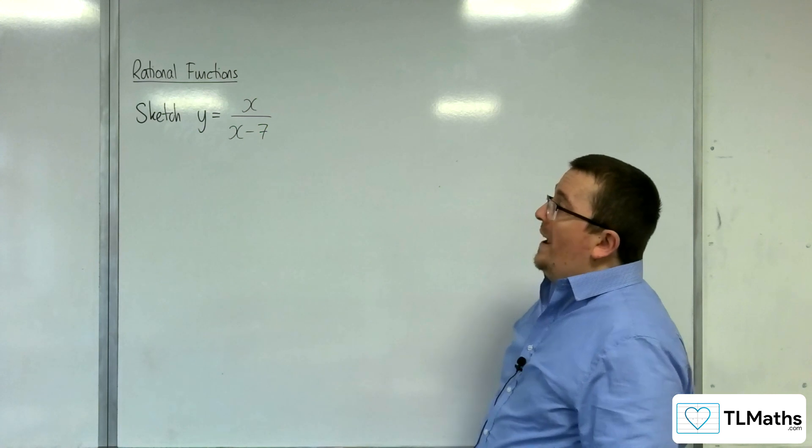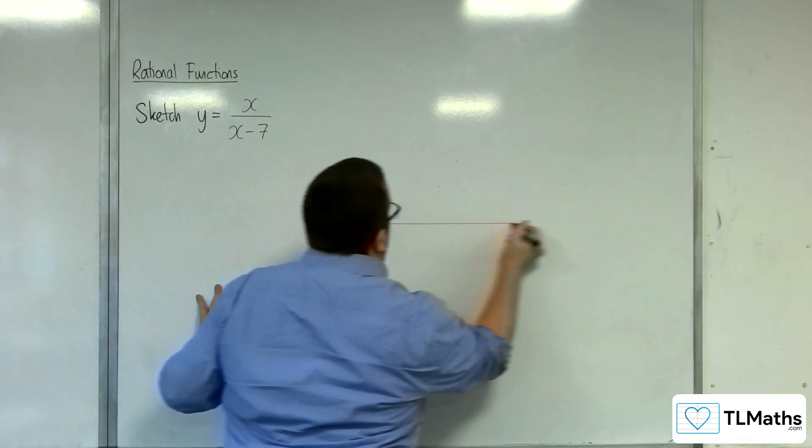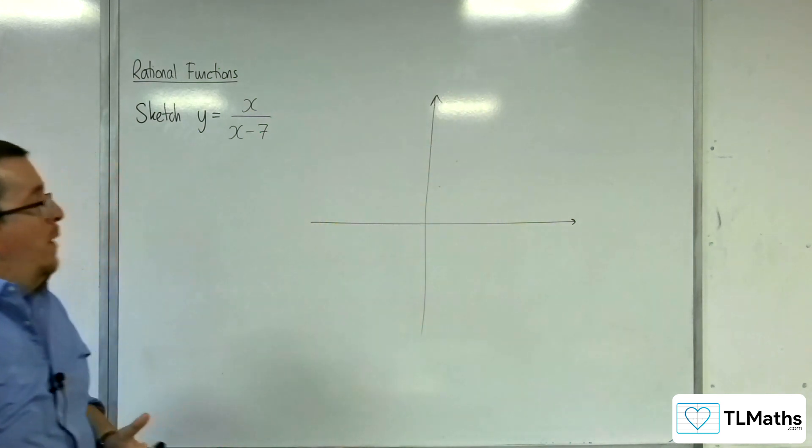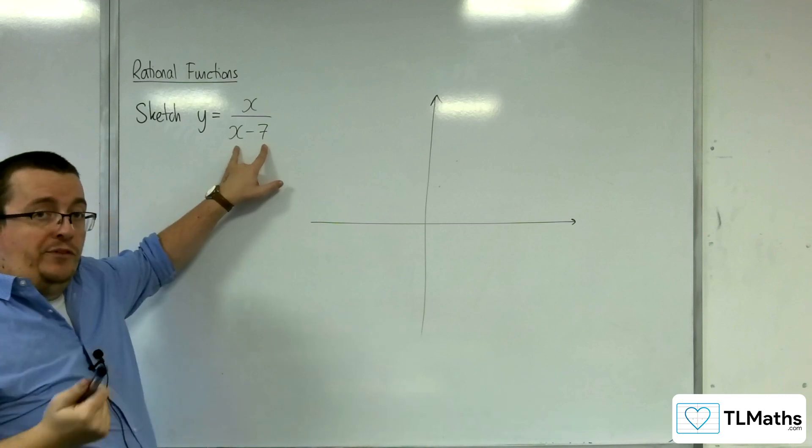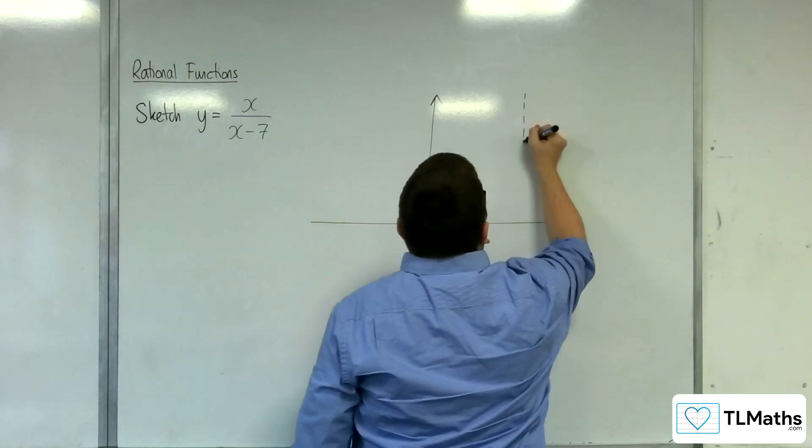In this video I'm going to sketch y equals x over x minus 7. So, once we've drawn our axes, the first thing to do is to identify where the denominator is 0, and so that will be x equals 7. So you know there's a vertical asymptote at x equals 7.